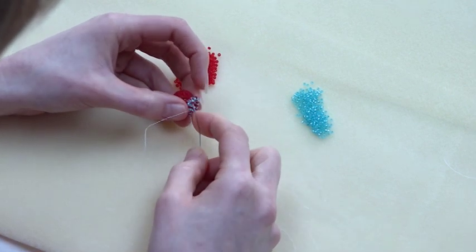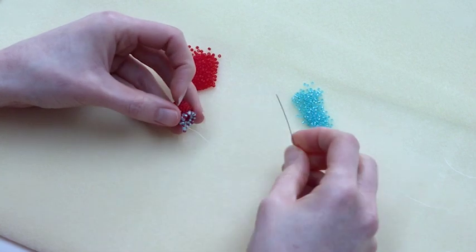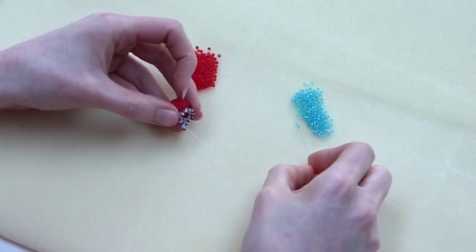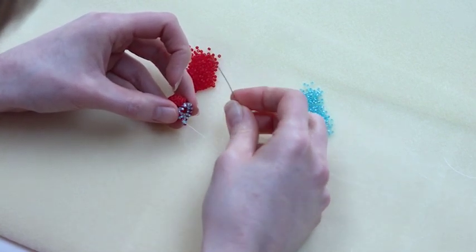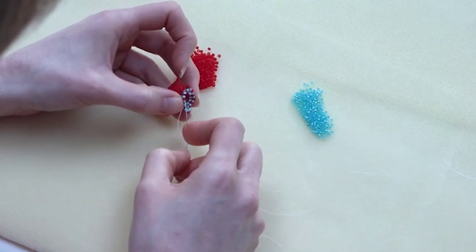So always for the netting, because you're going to be going through a middle bead, you need an odd number in each stitch, hence the increase from three to five. But again, I'm keeping my contrast bead in the middle.